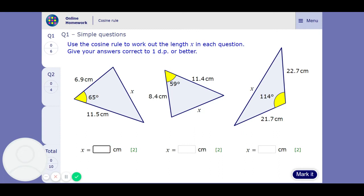So let's check some numbers in the formula and see what we get. So 6.9 squared plus 11.5 squared take away 2 times 6.5 times 11.5 times cos 65. Square root equals 1 decimal place, 10.6.